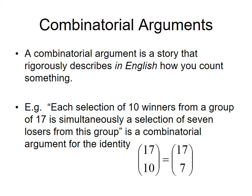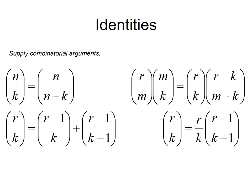A combinatorial argument is a story that describes in English how you would do it. For example: each selection of 10 winners from a group of 17 is simultaneously a selection of 7 losers — that's an argument that those two are equivalent. A common version: choosing 3 things out of 4 items is the same as choosing the 1 item to leave out. The most important identity is that n choose r equals n choose (n minus r), so 17 choose 10 equals 17 choose 7 since they add up to 17. You don't really need to memorize the other identities — just reference them on homework.